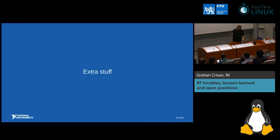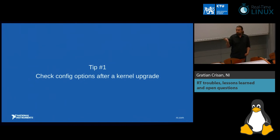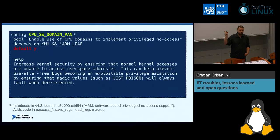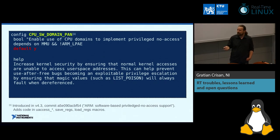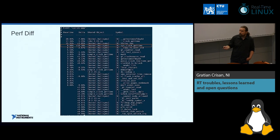A few tips: first, check your kernel configs after kernel upgrades. On ARM, a security option was added that defaults to yes and adds code in all user-access macros (save/load registers), creating a 10% performance hit on clock_gettime. We disable that option and accept the security tradeoff.